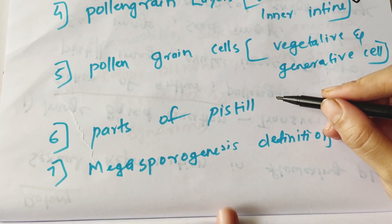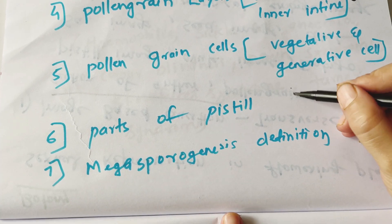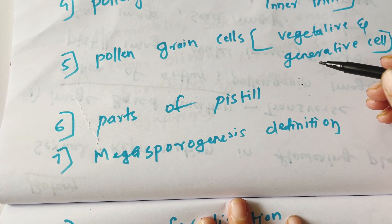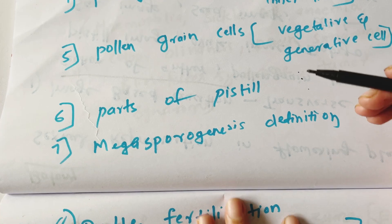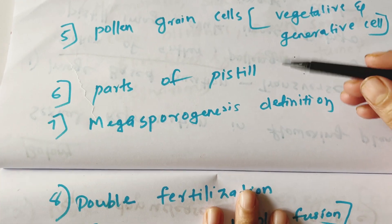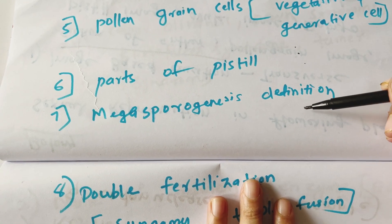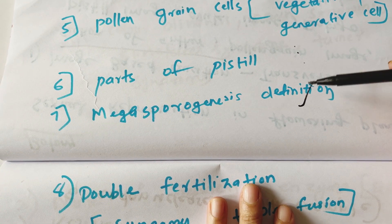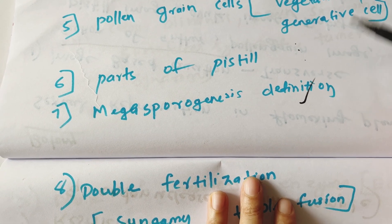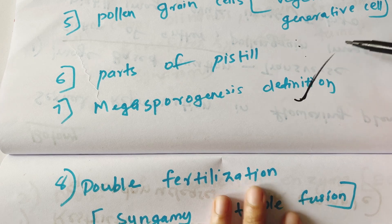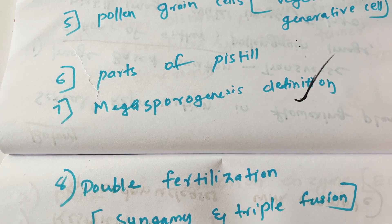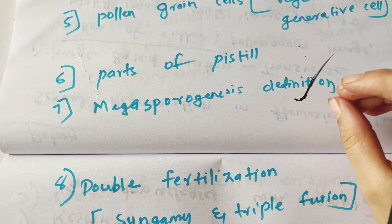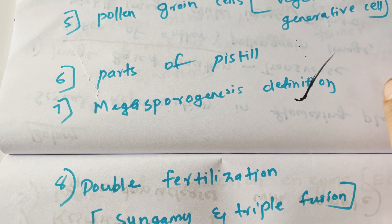Parts of pistil and their functions. Then, Megasporogenesis definition and Microsporogenesis definition. These definitions and pollen questions will be covered. In the next video, we will discuss more.